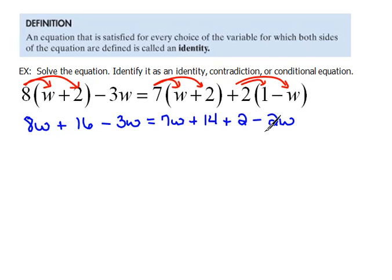And once we've done all of our distribution, now our next step is always to collect like terms. So on the left hand side, we can collect our w's. 8w minus 3w would be 5w plus 16 equals.